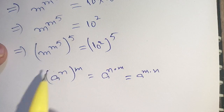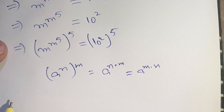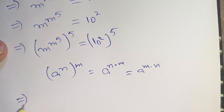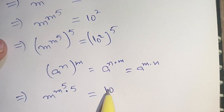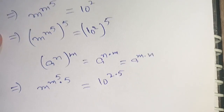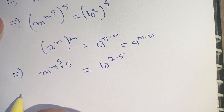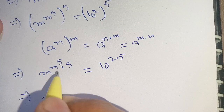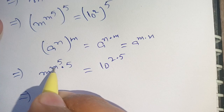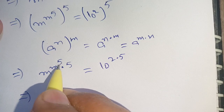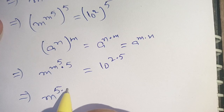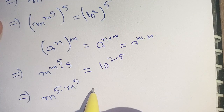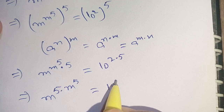Now, on applying this identity on the left hand side as well as on the right hand side, we have m raised to the power m raised to the power 5 times 5, is equal to 10 raised to the power 2 times 5. On the next step, m raised to the power 5 can shift in place of m, and m raised to the power 5 shifts in place of 5. We can write this as m raised to the power 5 times m raised to the power 5, is equal to 10 raised to the power 10.